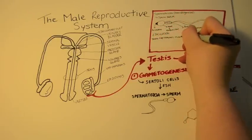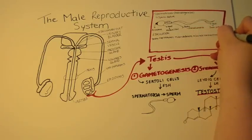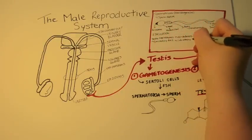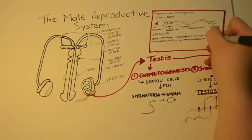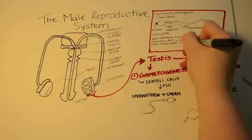During ejaculation, sperm travel from the epididymis, where it is stored, through the vas deferens, through different glands, until it reaches the urethra, where it is ejaculated from the penis. The sperm enters the urethra, just below the urinary bladder, at the ejaculatory duct.